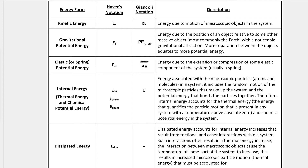Elastic or spring potential energy would be involved in any problem that involves something that can stretch or be compressed and rebounds, like a spring. Internal energy is kind of a catch-all for all sorts of energy related to the particles that make something up. Thermal energy is due to the random motion of particles when they are above absolute zero. Chemical potential energy is energy stored in the chemical bonds between the particles that make up a substance.